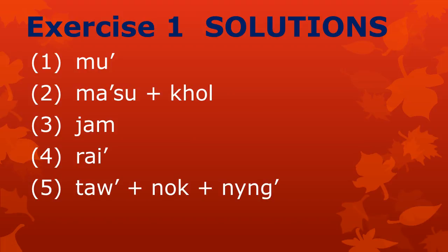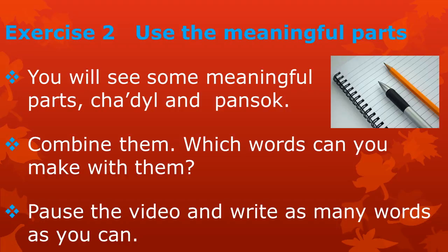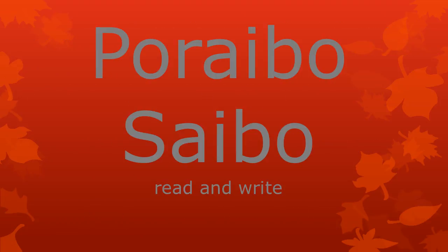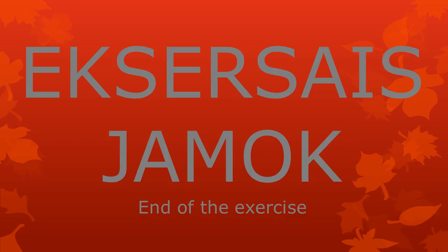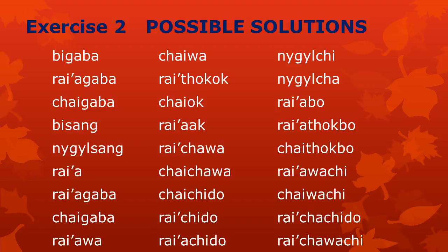Let's do another exercise. Exercise 2: Use the meaningful parts. You will see some meaningful parts — some are tzadl and others are pansok. Combine them in different combinations. Which words can you make with them? Here we go! Make as many words as you can, then pause this video. Have you written all possible words yet? If not, pause again. Here are the solutions. You can see many of the words you could have made with the tzadl and pansok combined. Maybe you found even more words — that is totally okay.